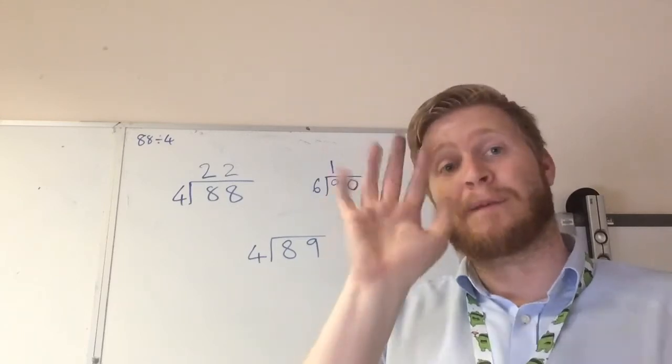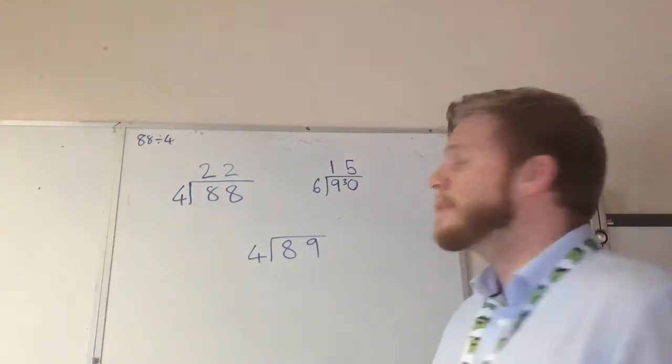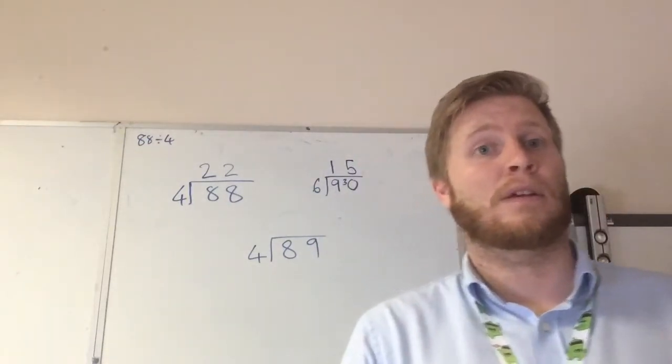So we'll count through, and we know that there's 5 sixes in 30. So we put our 5 there. And now we know that 90 divided by 6 is 15.